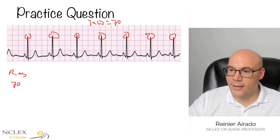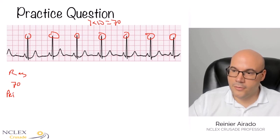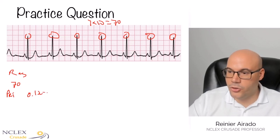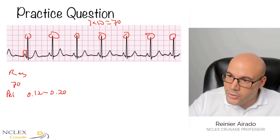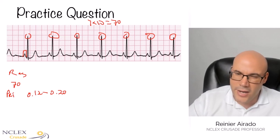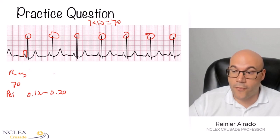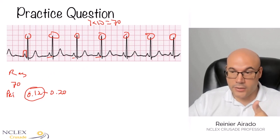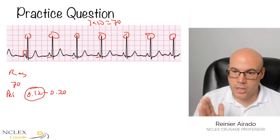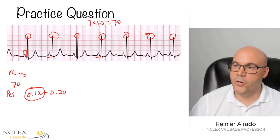We know the rhythm is regular and the heart rate is 70. Now we need to find the PR interval. Normal is 0.12 to 0.20. We start at the beginning of the P wave to the beginning of the QRS. We get about 3 small boxes and a little bit more — 3 times 0.04 is 0.12, so it's normal. If you measure each one, you'll see the PR interval is the same and constant, not prolonged or variable through the strip.